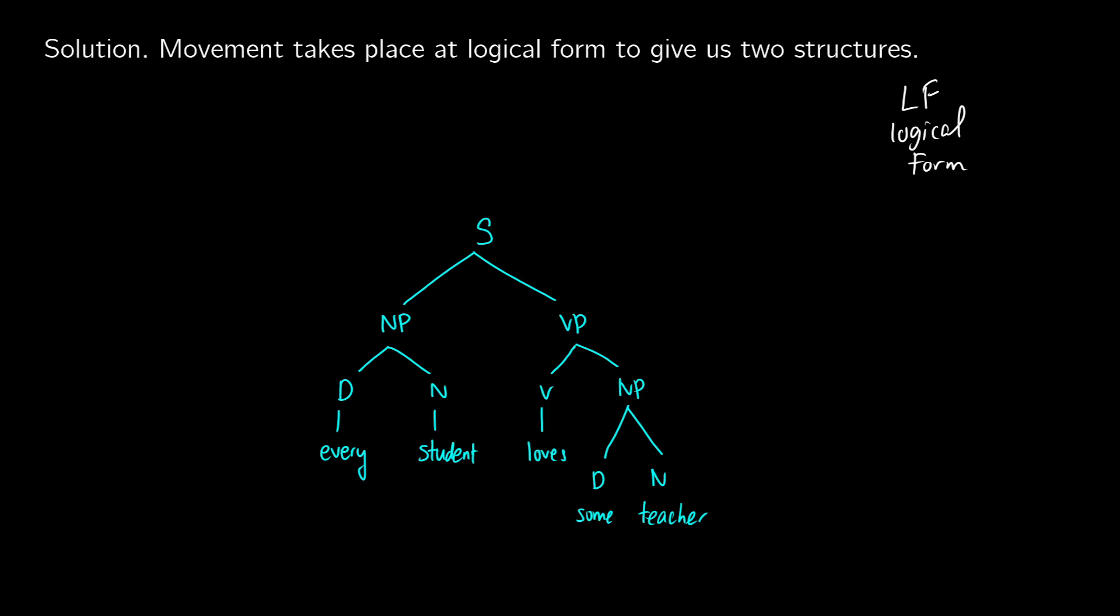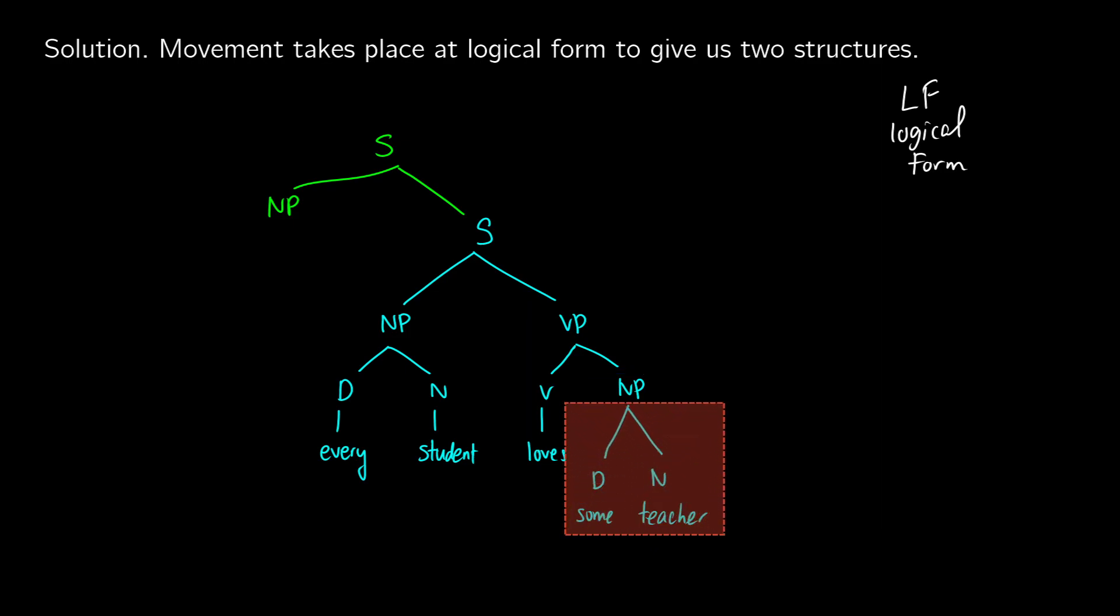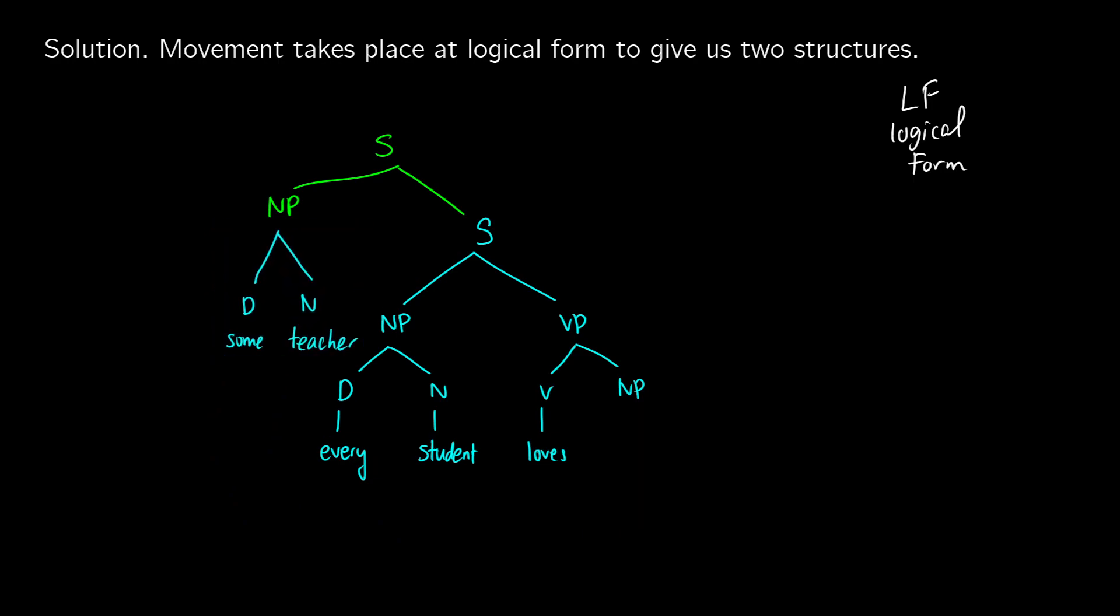So what we're going to do in logical form is create a new structure that has two different meanings. And how we're going to do this is just by doing movement like we did in our translations. So what we'll do is I'll use a different color for this, we're going to introduce a new sentence node, and we're going to introduce a new noun phrase node. And whatever we move up first is going to take that position. So let's say we're going to move some teacher up first. So let's just pull this. This is going to get dragged up into our new position.